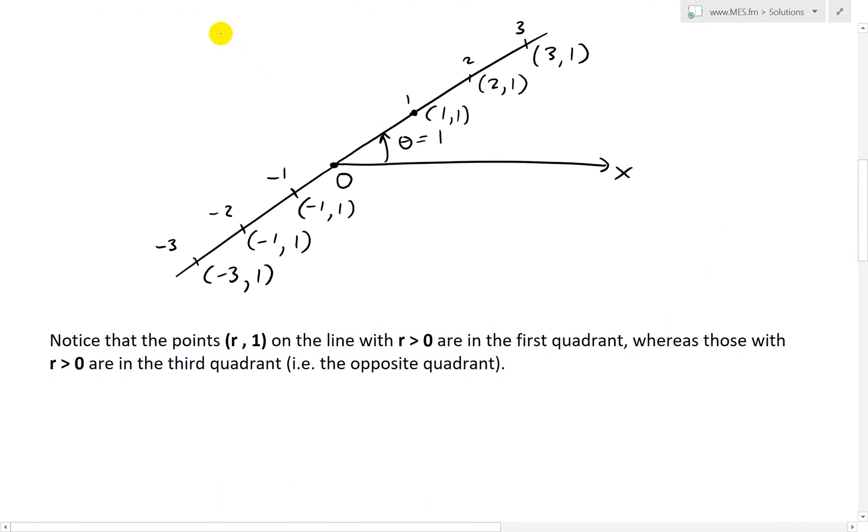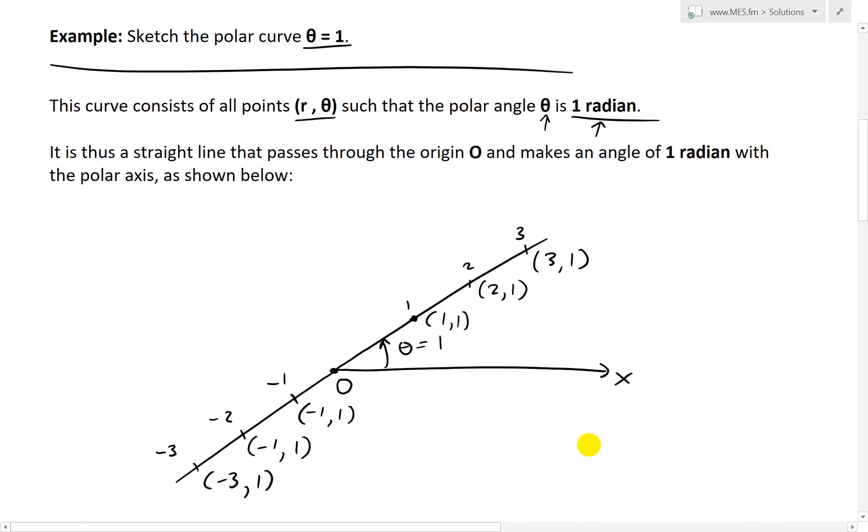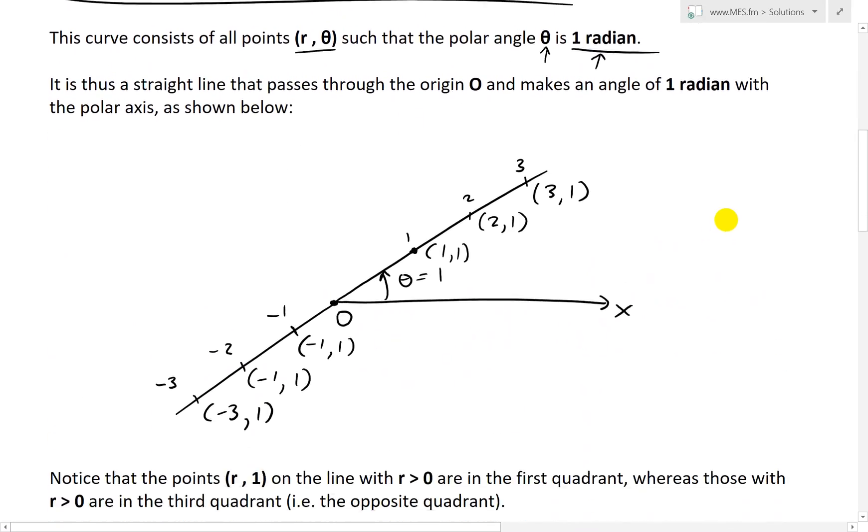If you had a different angle, it could be a crisscross this way, etc. And as you could picture, you could have just unlimited types of lines going through the origin with very basic equations like theta equals 1 or theta equals 2, etc.